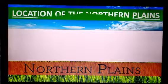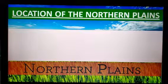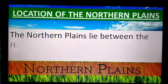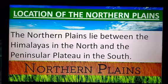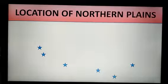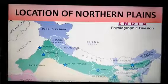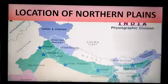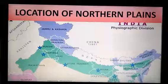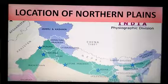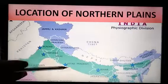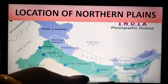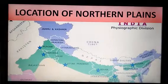Let's move towards the Northern Plains. The Northern Plains lie between the Himalayas in the North and the Peninsular Plateau in the South. With the help of an Indian political map, we can see that Northern Plains occupy a great part of North India. It extends from Punjab in the West to Assam in the East, covering the states of Punjab, Haryana, Uttar Pradesh, Bihar, West Bengal and some parts of Assam.